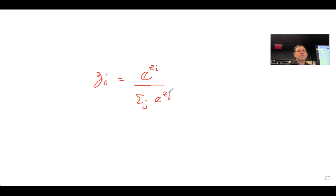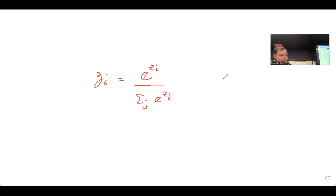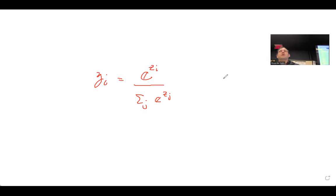Basically this is just a denominator, and for each one this results in a vector — if you have three, then a vector of three elements. Believe it or not, that's kind of neural networks in terms of architecture. That's it.